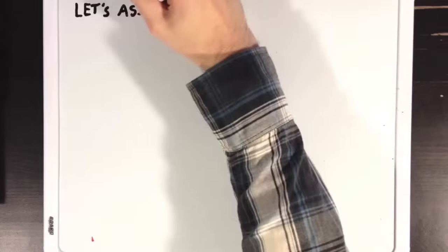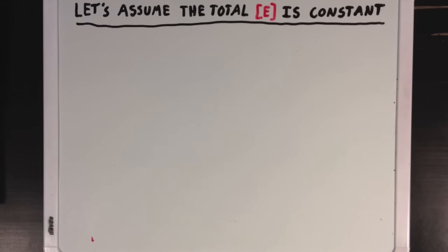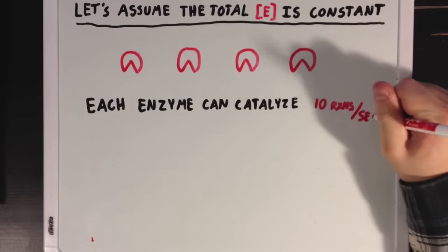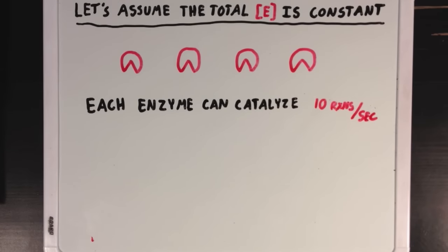Now when we think about enzyme kinetics, we like to assume that we're in a situation where the total concentration of enzyme is constant. And this is generally the case when we're looking at enzymes working in different cells. Now if we say that we only have 4 enzymes here, and each enzyme can work at a speed of about 10 reactions per second, that would mean that the absolute maximum rate of our reaction would be 40 reactions per second. And this rate we would call Vmax, or our max speed.